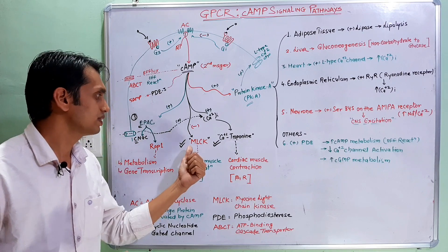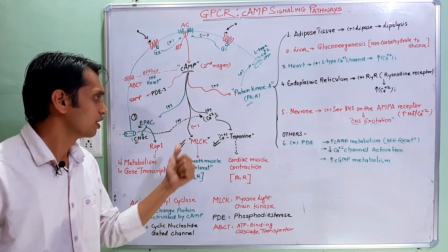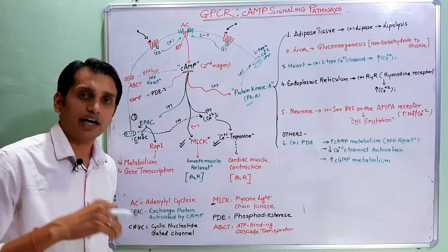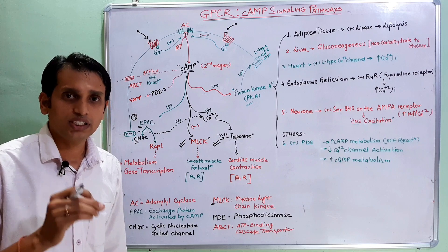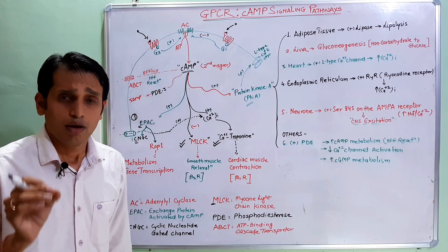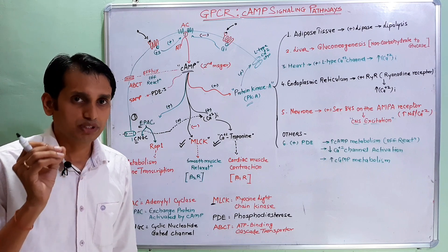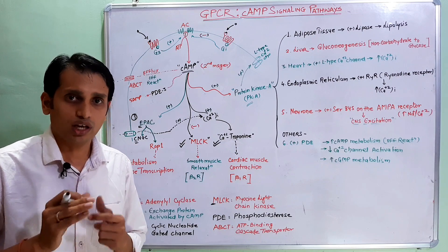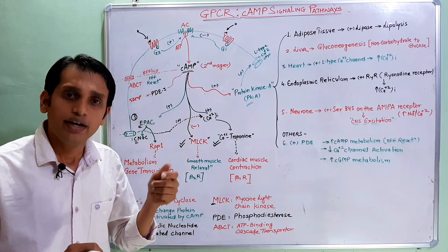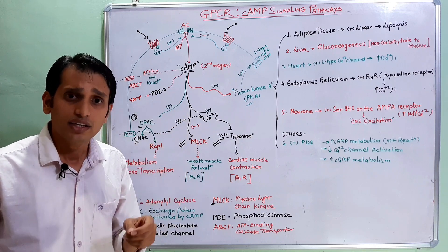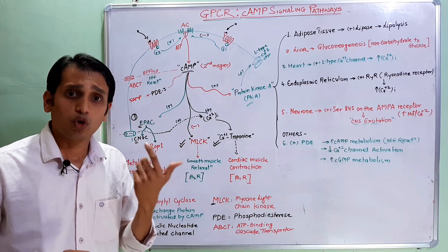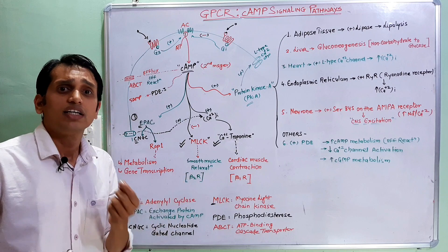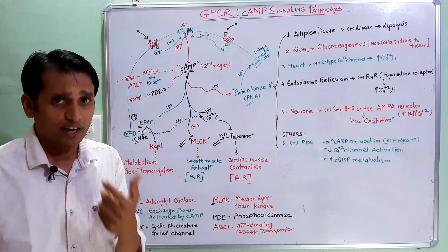Second, cyclic AMP inhibits the activity of MLCK — myosin light chain kinase. MLCK is mainly found in smooth muscle cells and is responsible for the contraction of smooth muscles, such as respiratory muscles, GI muscles, or vascular muscles. Cyclic AMP inhibits MLCK, therefore relaxing smooth muscles and causing vasodilation or bronchodilation. For example, beta-2 receptors are Gs-PCR and cause a vasorelaxant effect.